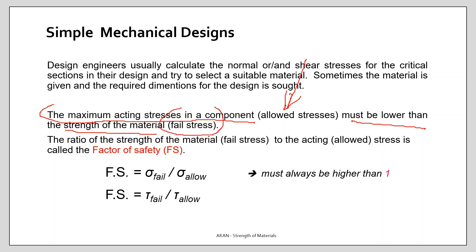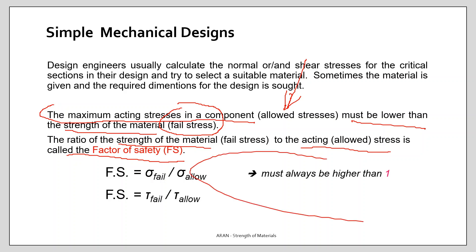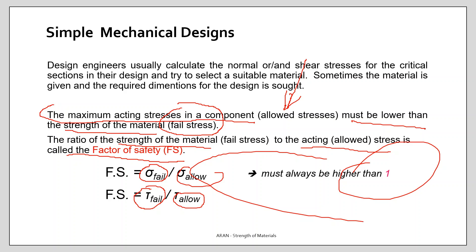The strength of the material is also called the fail stress. The ratio of the strength of the material to the acting stress is called the safety factor, and this factor must always be higher than one. For a safe design, the failing stress — both normal and shear — must be higher than the acting stresses, and their ratio is the factor of safety.